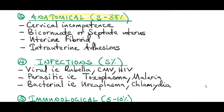Anatomical abnormalities account for about 3-38% of all miscarriages, with cervical incompetence being one of them. Cervical incompetence is premature cervical dilatation and effacement before a pregnancy reaches term. It is one of the most common causes of recurrent miscarriages as well as mid-trimester miscarriages.